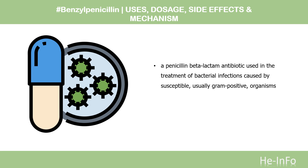Pharmacodynamics: Penicillin G is a penicillin beta-lactam antibiotic used in the treatment of bacterial infections caused by susceptible, usually gram-positive, organisms. Penicillin G has in vitro activity against gram-positive and gram-negative aerobic and anaerobic bacteria. The bactericidal activity of penicillin G results from the inhibition of cell wall synthesis and is mediated through penicillin G binding to penicillin-binding proteins (PBPs).